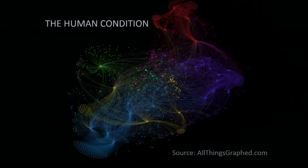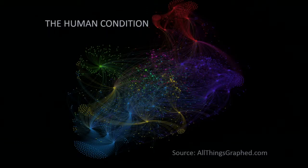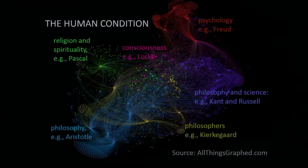The human condition is a fundamentally networked one. Many important games that we play that govern human behavior are played in a network context, as defined by our social networks, business relationships, geographical networks, or networks of ideas. This beautiful picture from the blog 'All Things Graphed' is a picture of the Wikipedia network related to the human condition, where every node is a web page and the links are hyperlinks between web pages. An automated community detection algorithm found clusters that are the essence of the human condition.